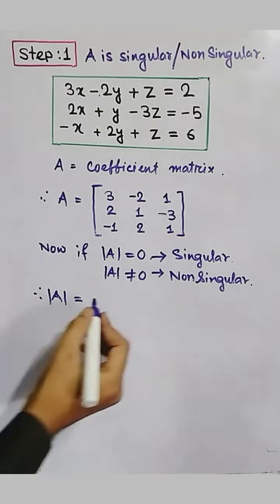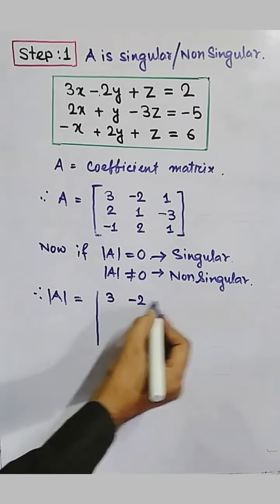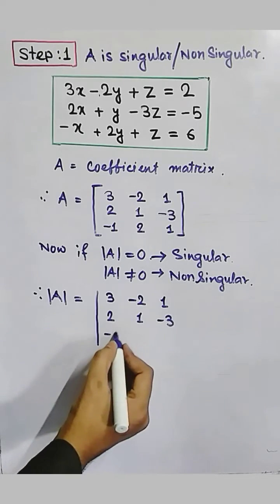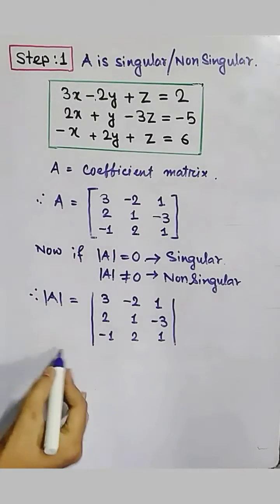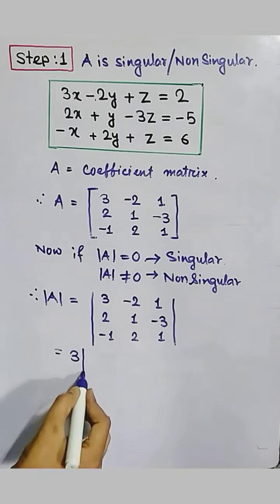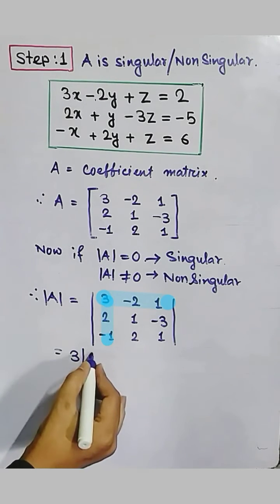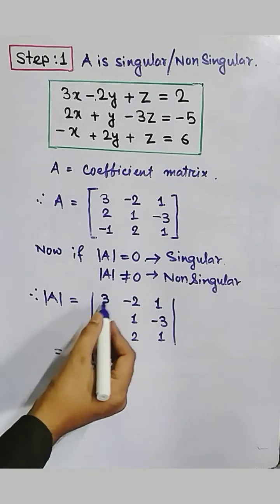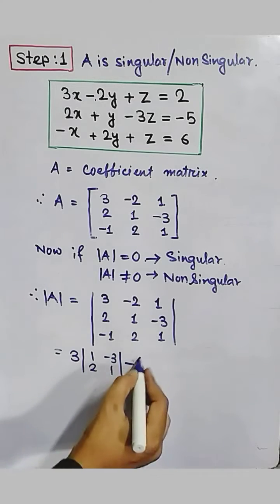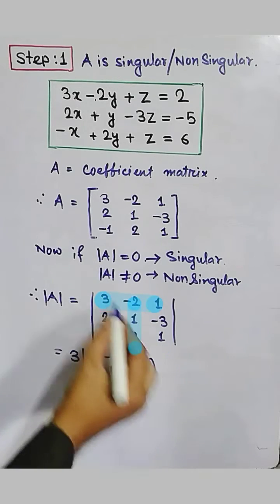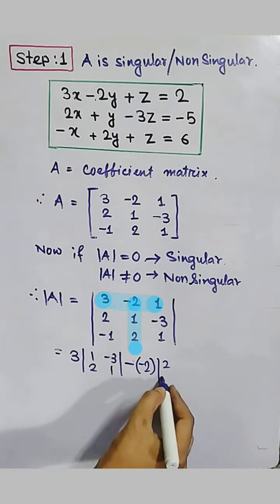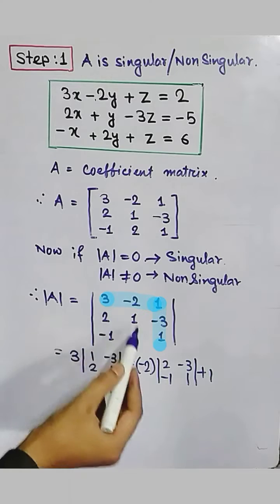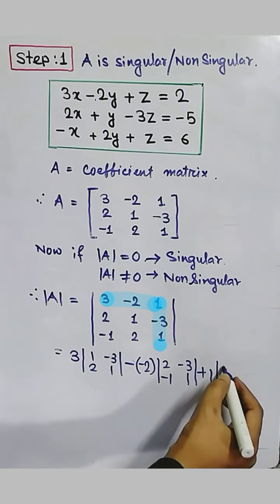Now we will find the determinant value of A. Write down matrix A in determinant form. Expanding with the first row: 3 into the determinant of [1, minus 3; 2, 1], minus (minus 2) into the determinant of [2, minus 3; minus 1, 1], and 1 into the determinant of [2, 1; minus 1, 2].